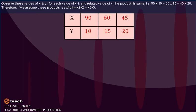Observe these values of x and y. For each value of x and related value of y, the product is same. That is, 90 into 10 is equal to 60 into 15 is equal to 45 into 20. Therefore, if we assume these products as x1 y1 is equal to x2 y2 is equal to x3 y3.